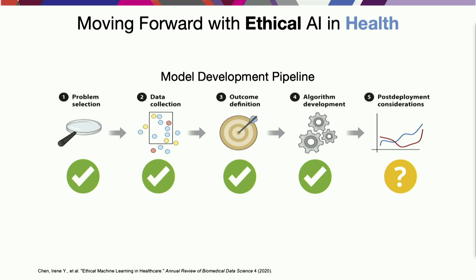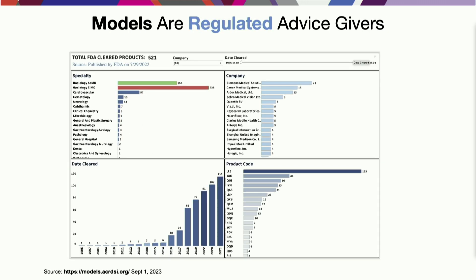So why aren't these all deployed? Well, you can deploy models in the same way that you deploy a medical device. The FDA does clear software as a medical device—that's one option. That's not the only way that AI makes it into a clinical environment; we'll talk about an example.